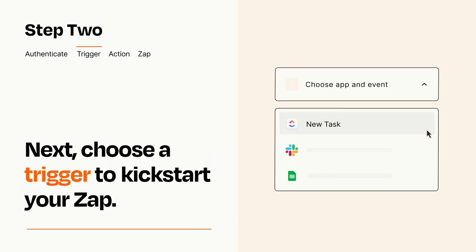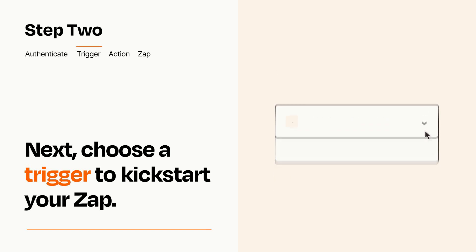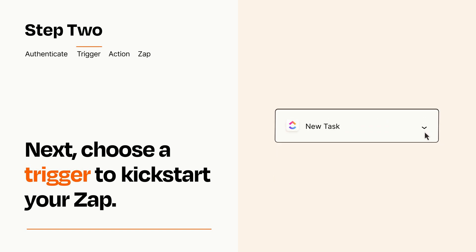Now let's set up your trigger, which is the event that starts your Zap. Pick the trigger event that you want from the list. When you set up this step, your Zap will pull in test data from your trigger app that you'll see later when setting up your action app.